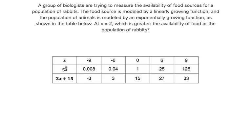A group of biologists are trying to measure the availability of food sources for a population of rabbits. The food source is modeled by a linearly growing function, and the population of animals is modeled by an exponentially growing function, as shown in the table below. At x equals 2, which is greater: the availability of food or the population of rabbits?